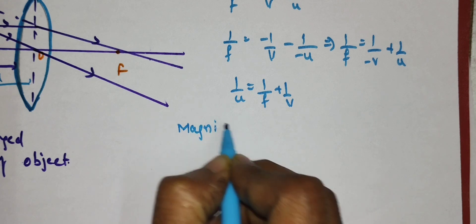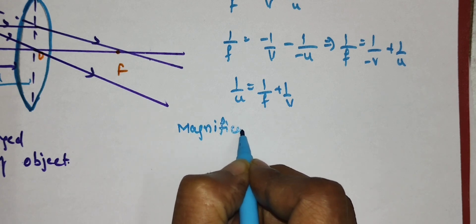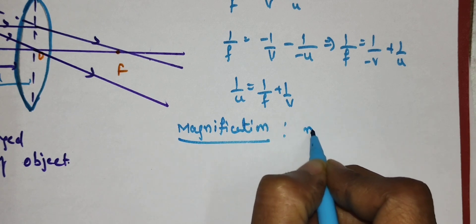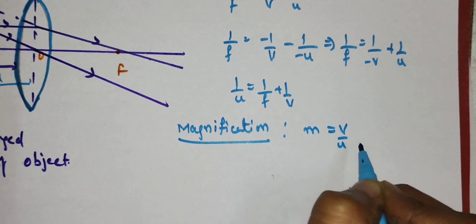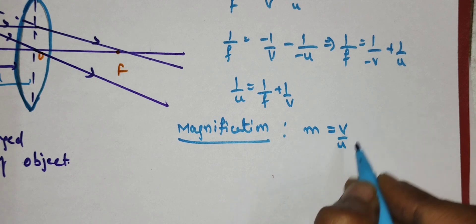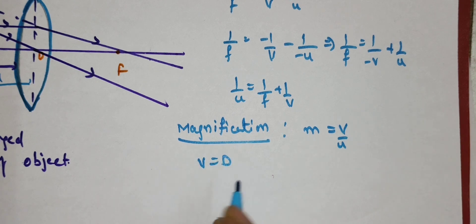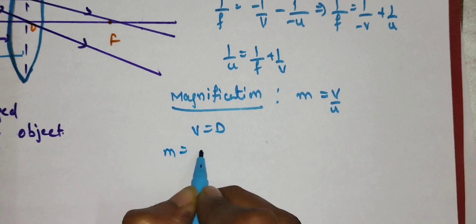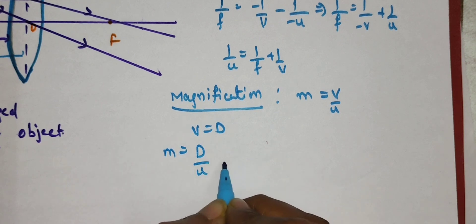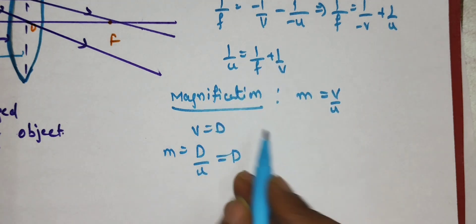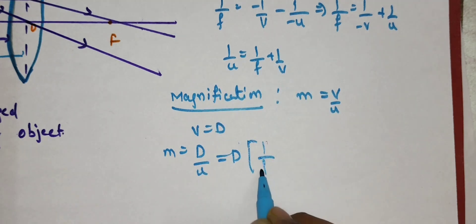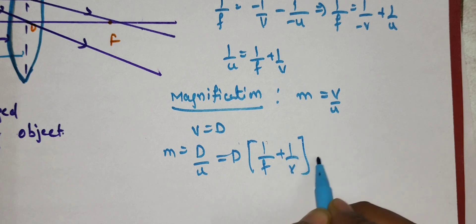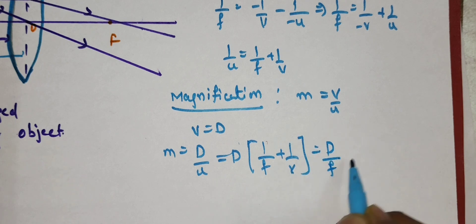Magnification M = V/U. We substitute the values: the image is forming at the least distance of distinct vision, so we take V = D. That gives M = D/U. From the above equation, 1/U = 1/F + 1/V. So M = D × (1/F + 1/V).